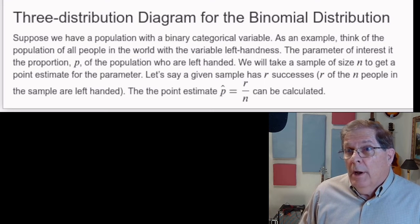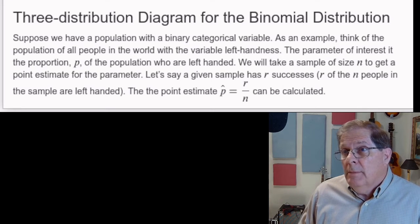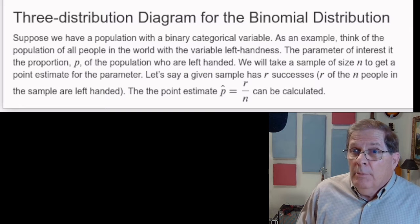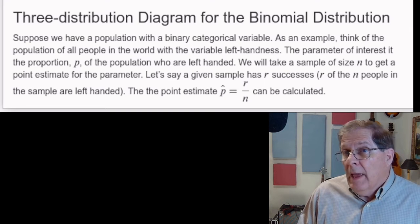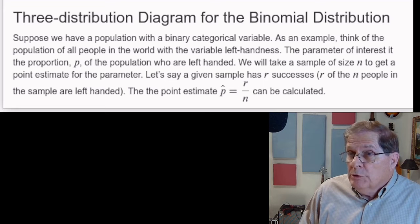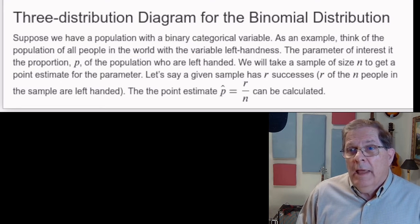There's a couple things we could do. We could take a sample, maybe of size n, and get the point estimate for the parameter. That is, we could find the proportion of the sample that are left-handed.